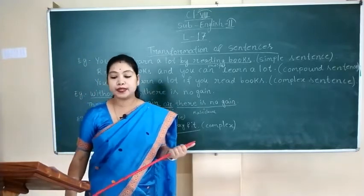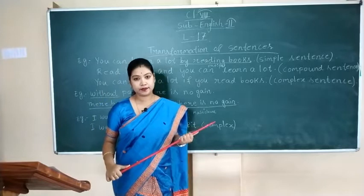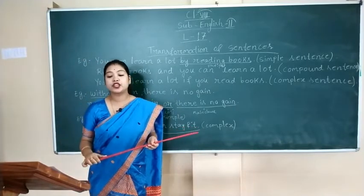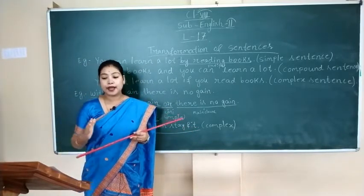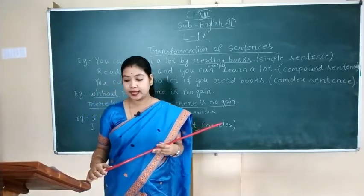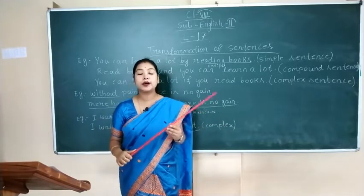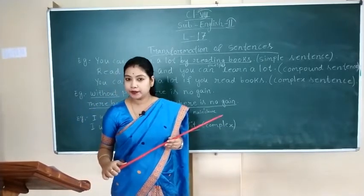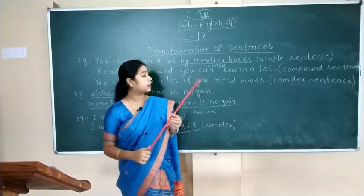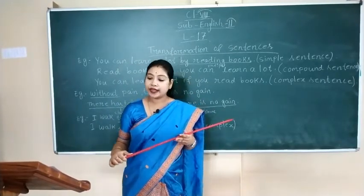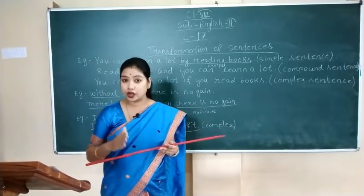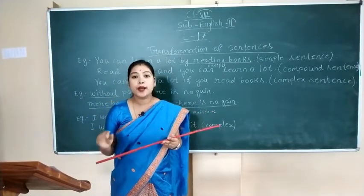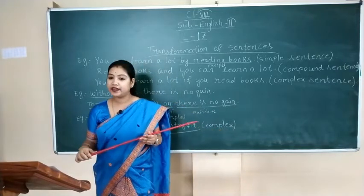Now we will learn how we can convert a simple sentence into a compound sentence. The definition in your book says: simple sentences can be transformed into compound sentences by expanding words or phrases into clauses and connecting them to the main clause by using coordinating or correlative conjunctions.